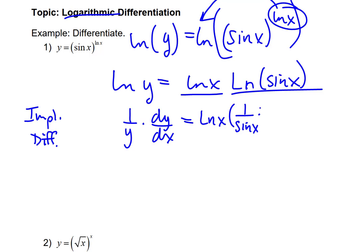The derivative of sine is cosine, giving us 1 over u times u prime for the second. Then plus the second, which is natural log of sine of x, times the derivative of the first, which is just 1 over x.